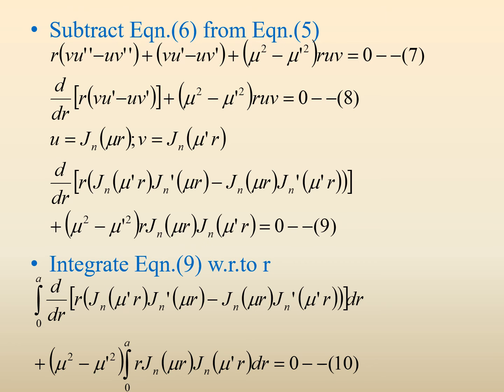Subtracting equation 6 from equation 5, we get r(v·u'' − u·v'') + (v·u' − u·v') + (μ² − μ'²)r·u·v = 0. The first two terms can be written as d/dr[r(v·u' − u·v')], so the equation becomes d/dr[r(v·u' − u·v')] + (μ² − μ'²)r·u·v = 0.